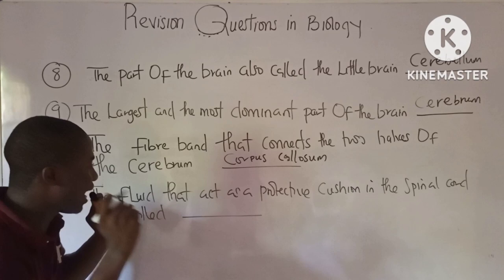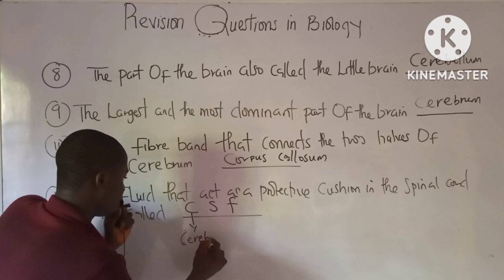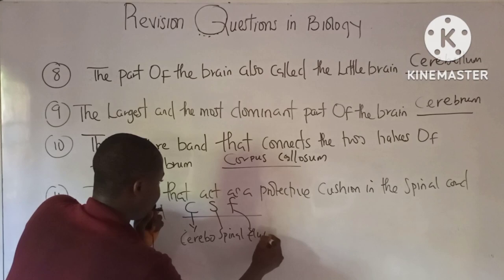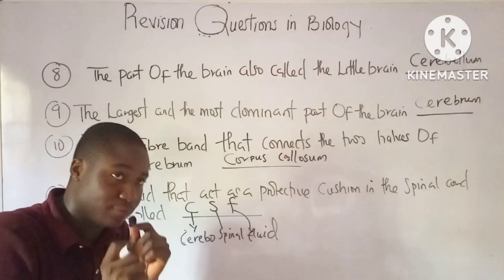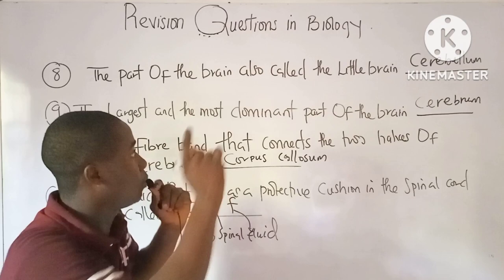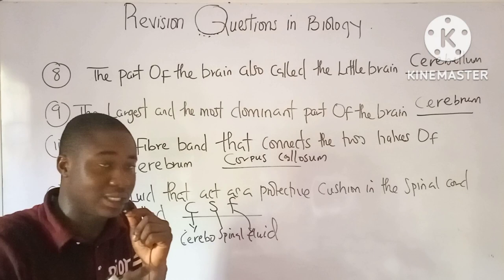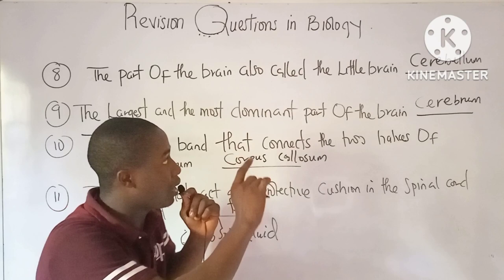Question 11: The fluid that acts as a protective cushion in the spinal cord is the cerebrospinal fluid (CSF). The nervous system has two parts: the central nervous system (CNS), which includes the brain and spinal cord, and the peripheral nervous system. The spinal cord controls involuntary and reflex actions, and the medulla oblongata also controls reflex actions.